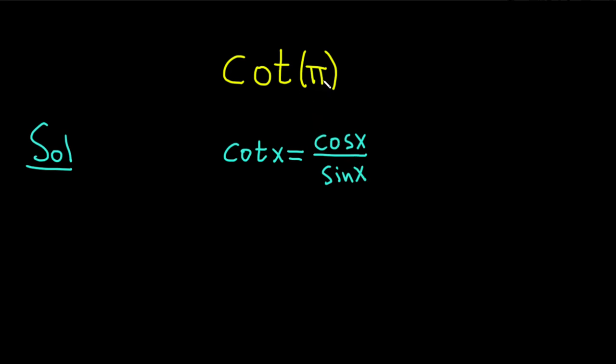And so in our case x is just going to be pi. So this is actually just the cotangent of pi, and that's equal to the cosine of pi divided by the sine of pi.